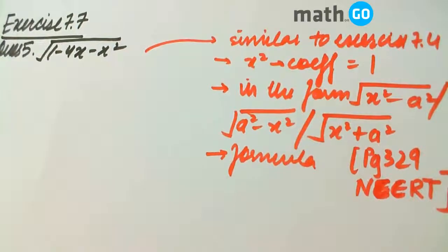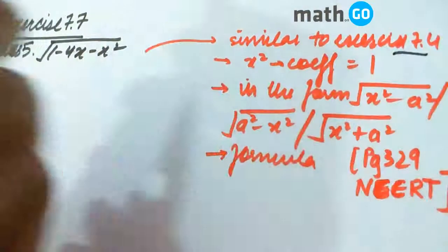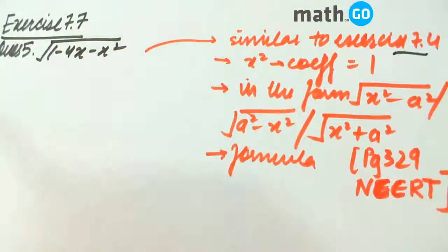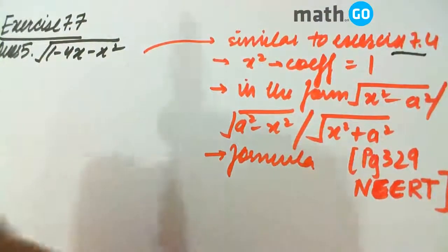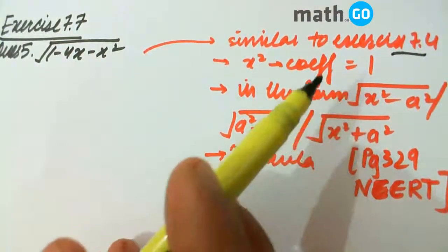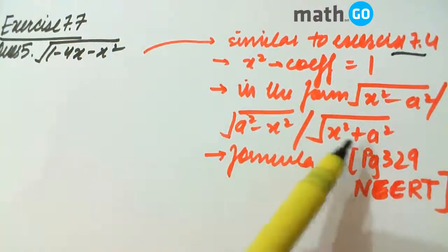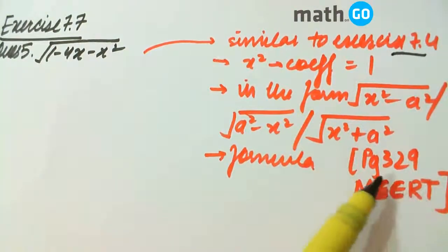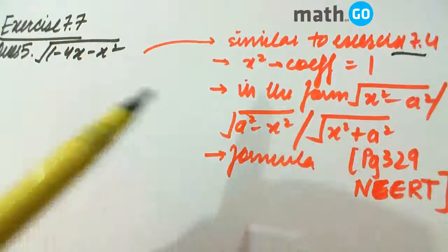Exercise 7.7, question number 5. This exercise is very similar to exercise 7.4. Remember this way — 1 upon something like this. The algorithm is same: first, coefficient of x squared is to be 1, then it is to be converted into one of the three standard forms, and then we apply the formula. The formulas are given on page 329 of the NCI.